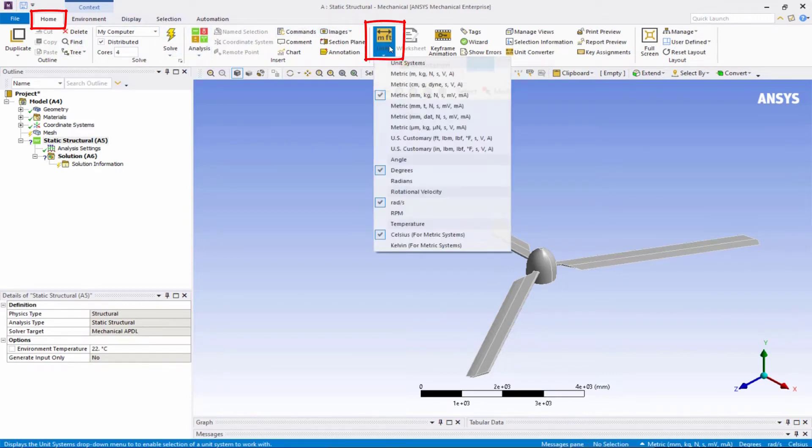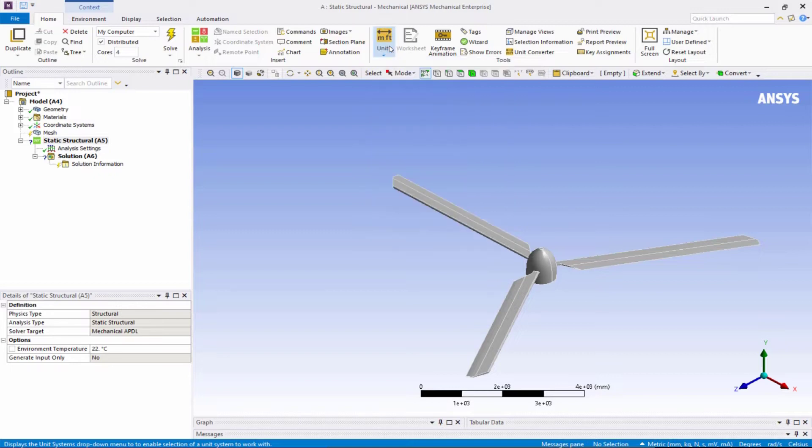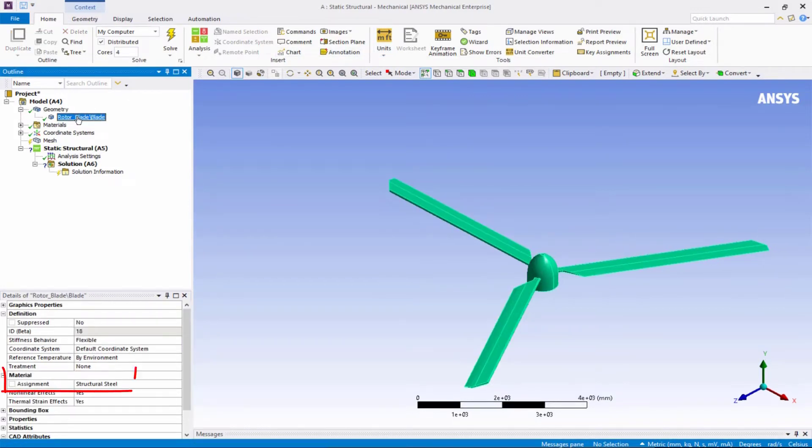We will set the units to metric millimeters, kilograms, Newtons for this simulation. If we expand the geometry, we can see the material for the blade is structural steel. We will keep it as is.